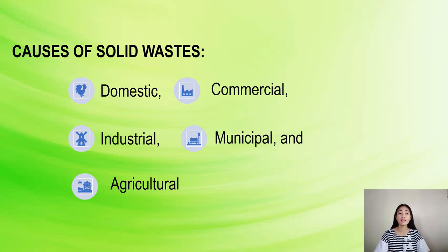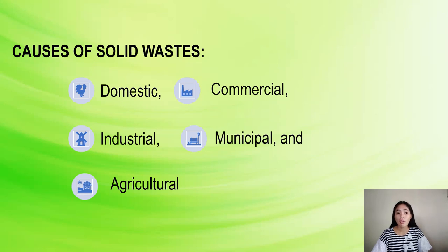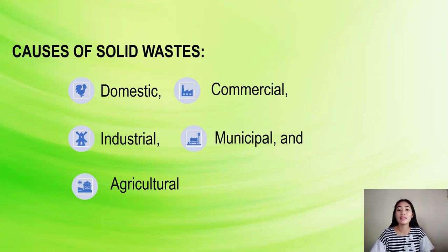Municipal solid waste, more commonly known as trash or garbage, consists of everyday items we use and then throw away — such as product packaging, grass clippings, furniture, clothing, bottles, food scraps, newspapers, appliances, paint, and batteries. This comes from our homes, schools, hospitals, and businesses.